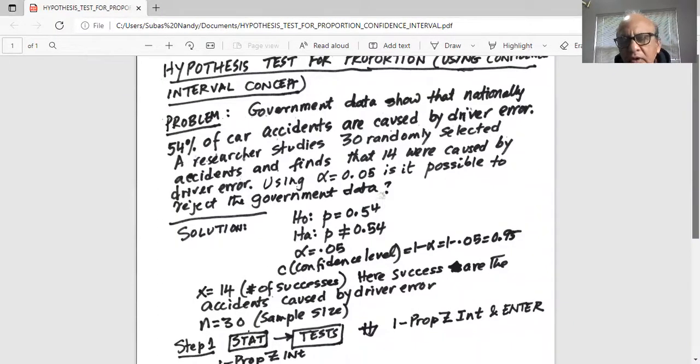So the null hypothesis is of course proportion of car accidents which are caused by driver errors, p, is equal to 0.54. This is the population proportion.